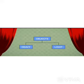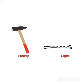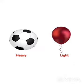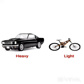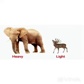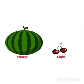Let's see some more examples. A hammer is heavy in weight, but a hairpin is light in weight. A ball is heavy in weight, but a balloon is light in weight. A car is heavy, but a bicycle is light. An elephant is very heavy in weight, but a deer is light in weight. A watermelon is heavy, but a cherry is light.